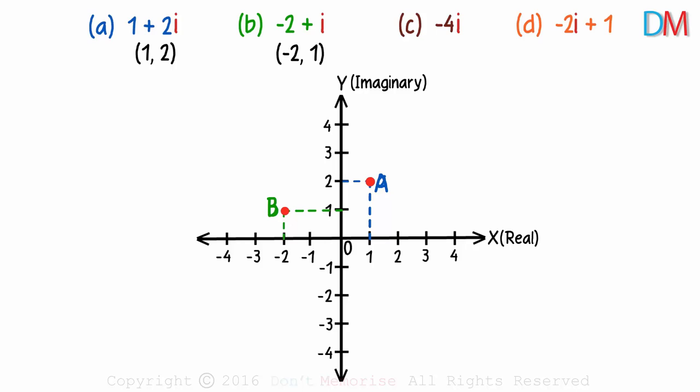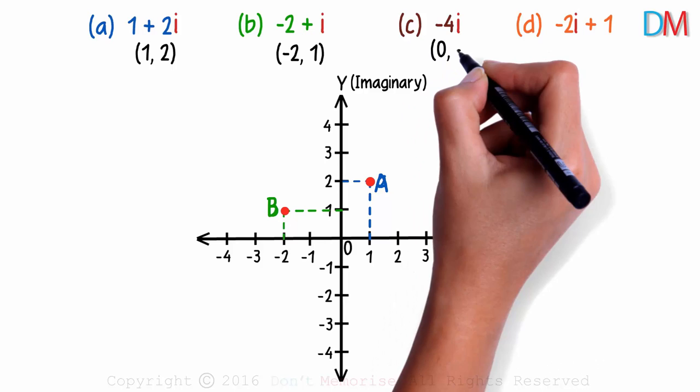Were you able to plot the third one? It's just negative 4i which can also be written as 0 minus 4i. The real part does not exist or we can say that it's 0, and the imaginary part is negative 4i. The ordered pair can be written as 0 comma negative 4.